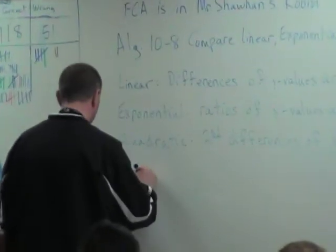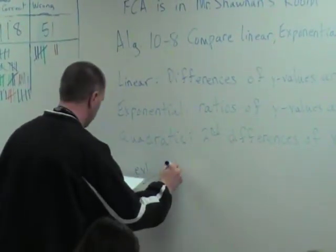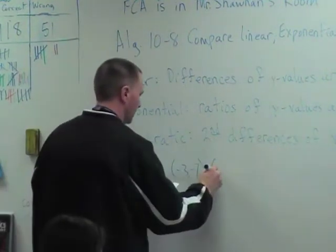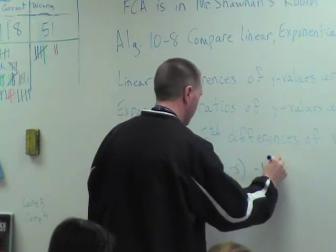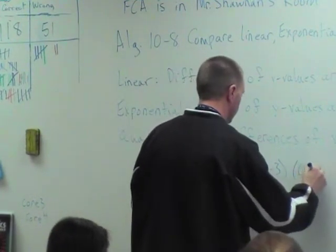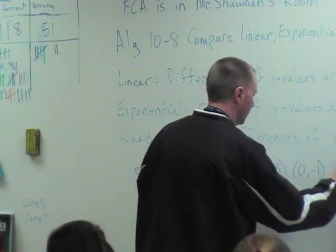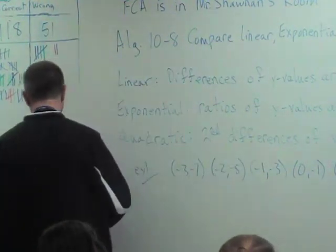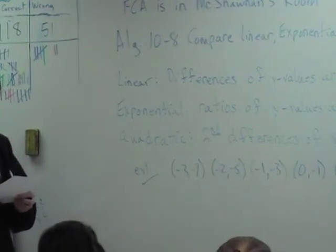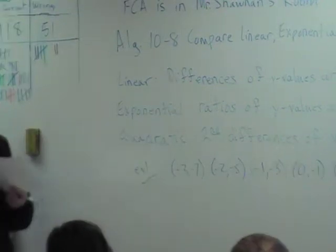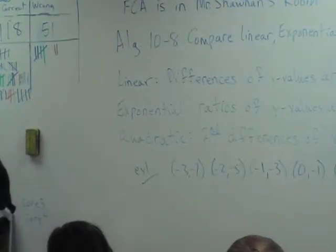So example one, you're going to be given some values. So here's some coordinates: negative three, negative seven; negative two, negative five; negative one, negative three; zero, negative one; and one, one. Basically, the x values, if you take the differences, they're going to be equal for all of them. So that's why we're focusing on just the y values here.